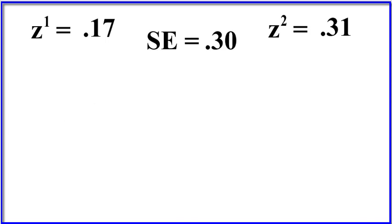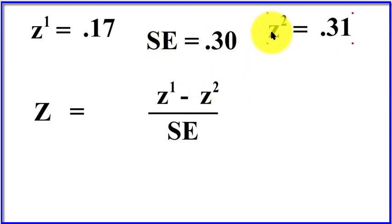So now we're going to calculate what I call the final Z. We're going to use this formula: we're going to subtract the second z-prime from the first z-prime divided by the standard error. So let's do that. And so this is the first correlation, second correlation, and that's the pooled standard error there. And we're going to get that number.